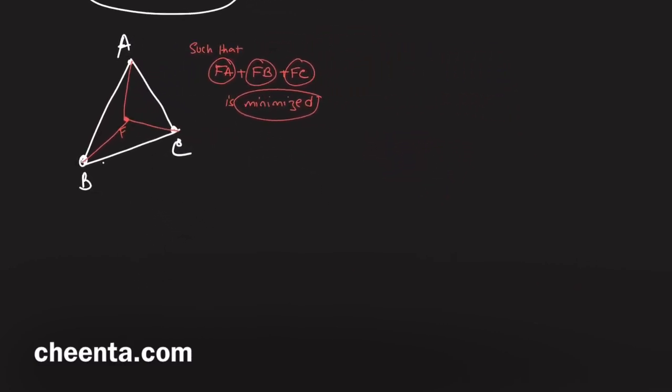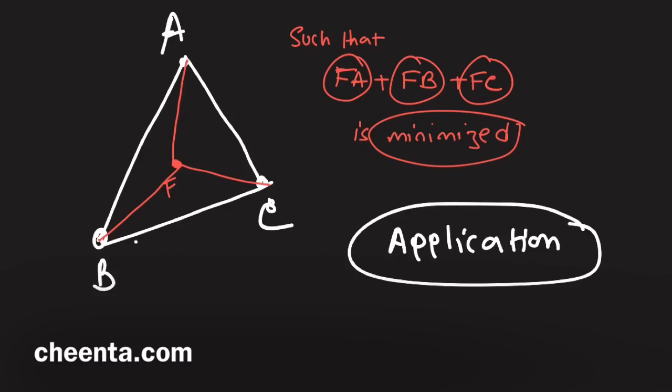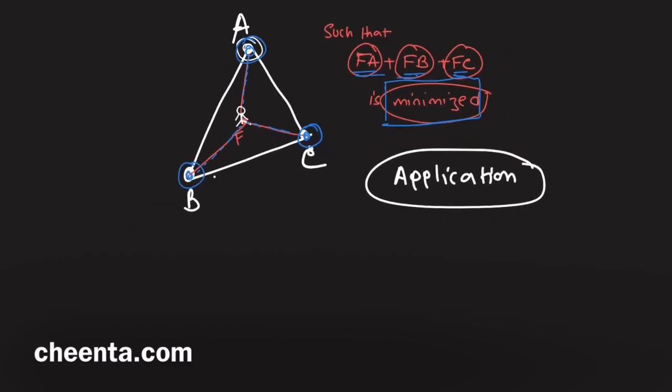Before we go into the geometry, think about the application of this idea in real life. If you want to build a pizza shop and cater to three homes, one at A, one at B, and one at C, you would want your shop situated such that the sum of these three distances is as small as you can make it. This will save you transportation cost.